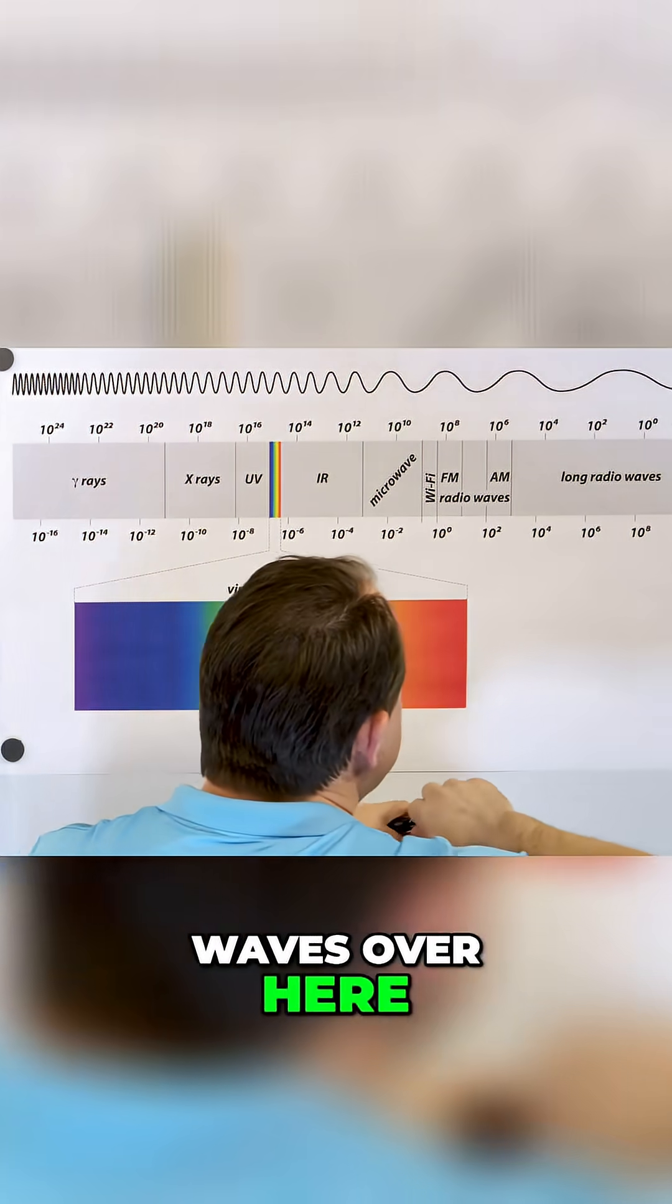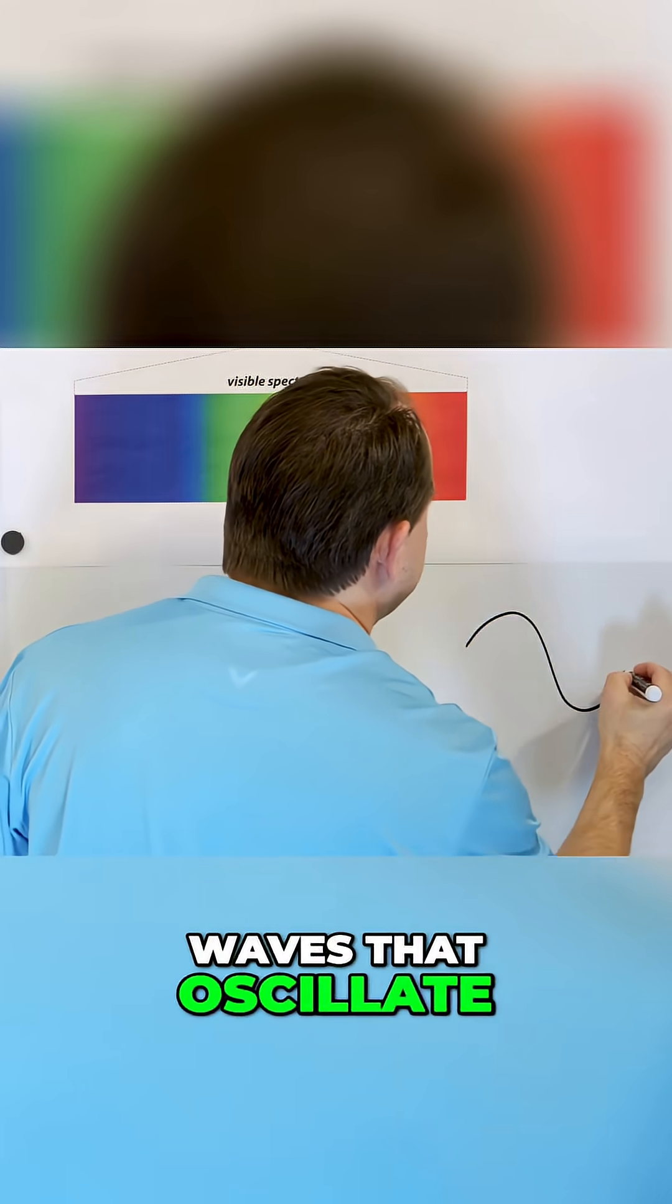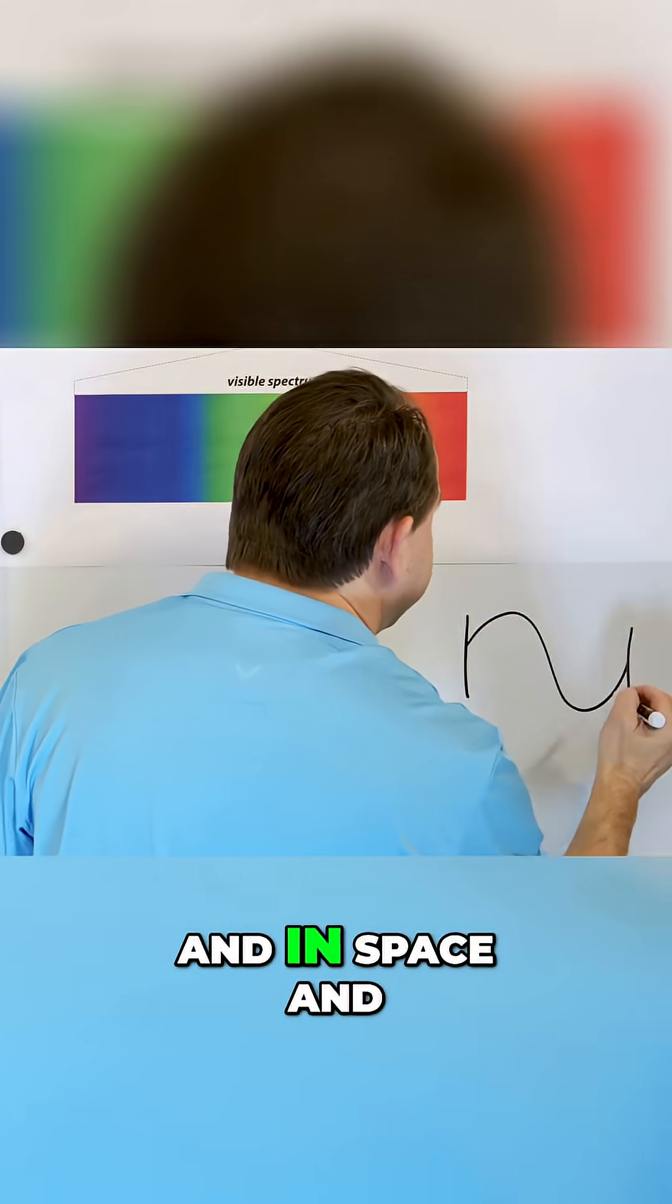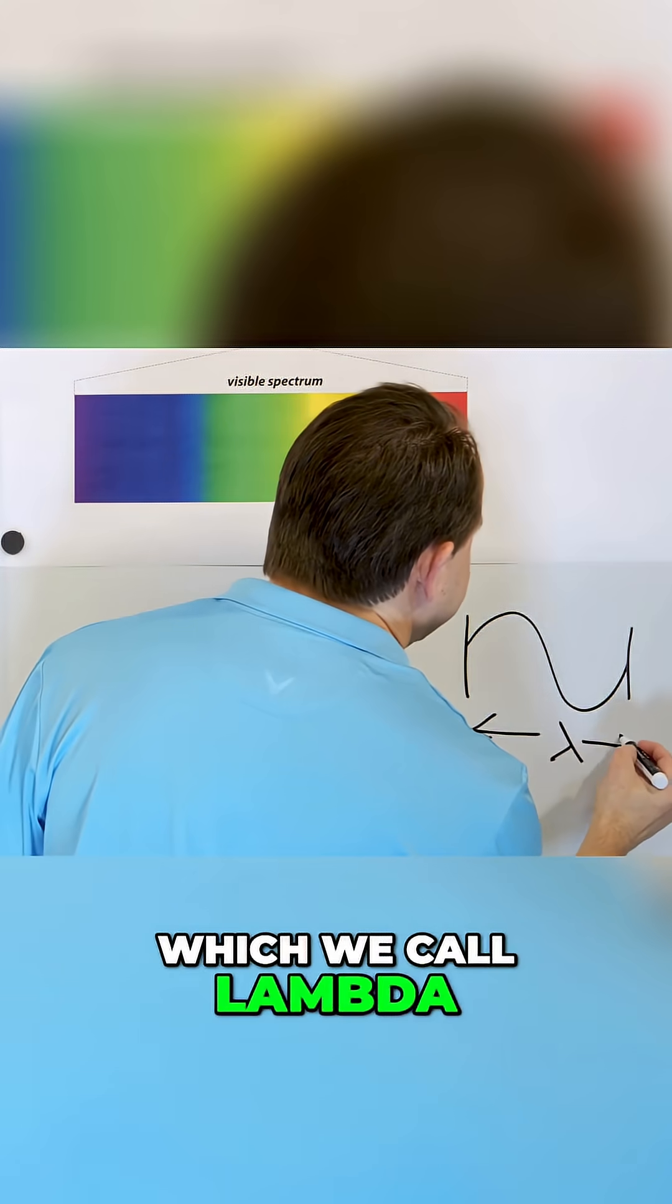So we have long waves over here, and when I mean wavelength, I mean these are waves that oscillate in space and in time. And so the wavelength, which we call lambda,